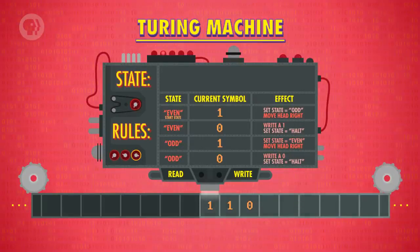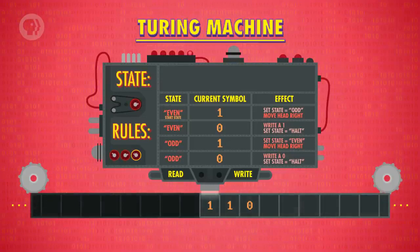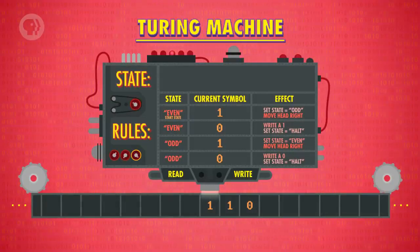Notice that our rules only ever move the head to the right, so the rest of the tape is irrelevant. We'll leave it blank for simplicity. Our Turing machine is all ready to go, so let's start it.